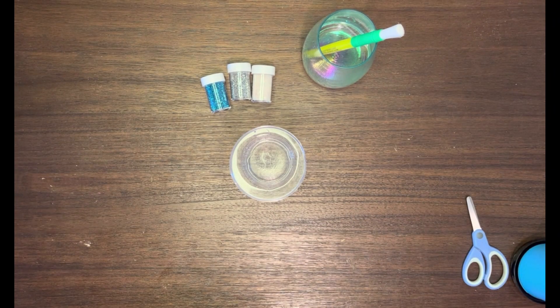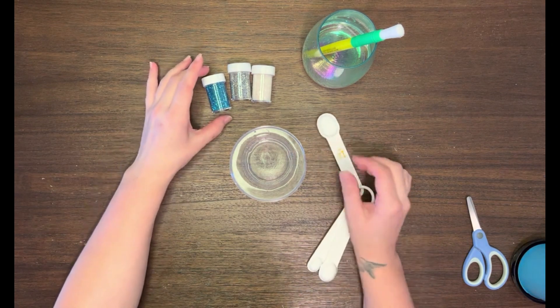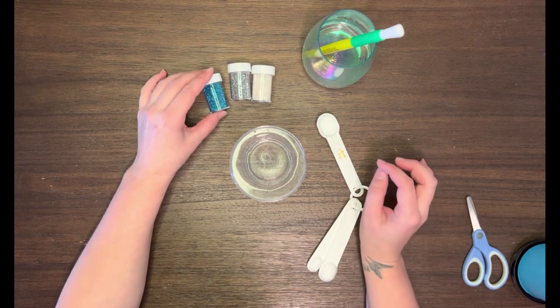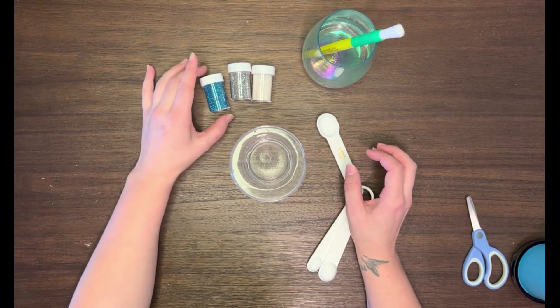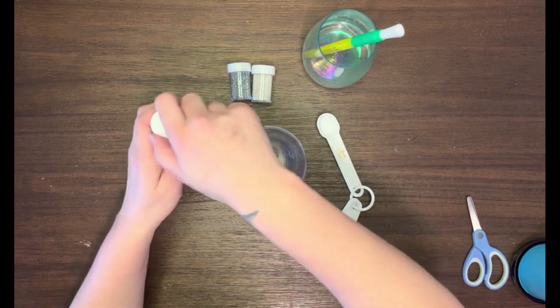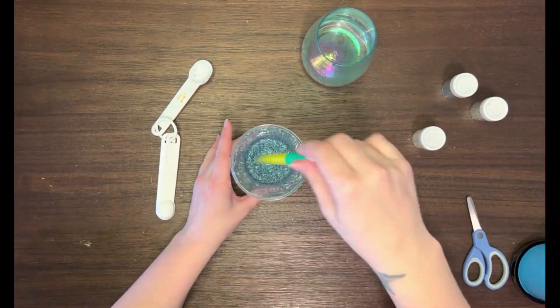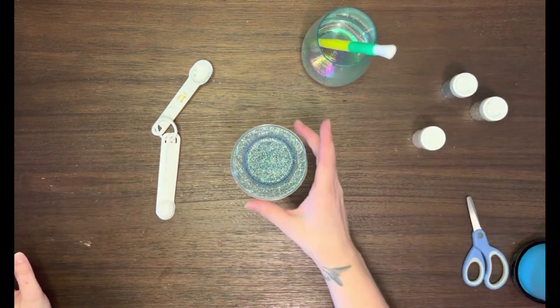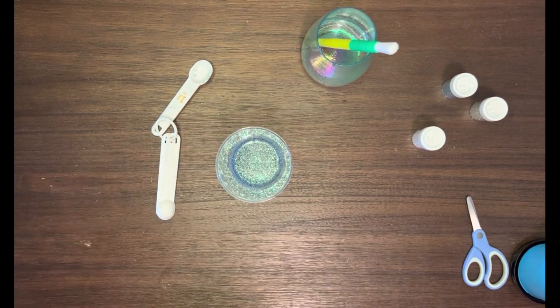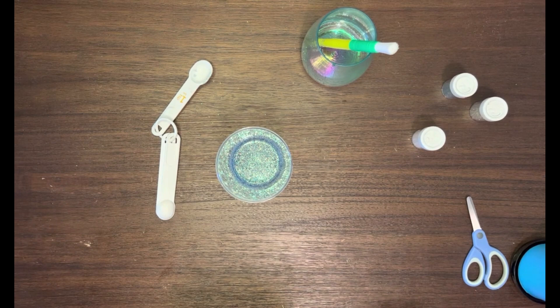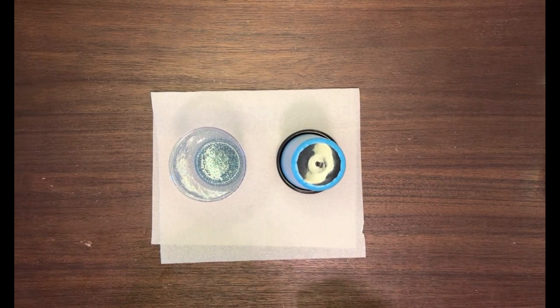With the glitter, you can add as much or as little as you want. I like to use teaspoons. Since my tumbler is primarily blue, I'm going to do a little less blue. I'll do three teaspoons altogether between the blue, silver, and white. You can see it's really saturated with glitter—it's going to be really glittery, which is what I want. You can use less or more, whatever you're trying to do.